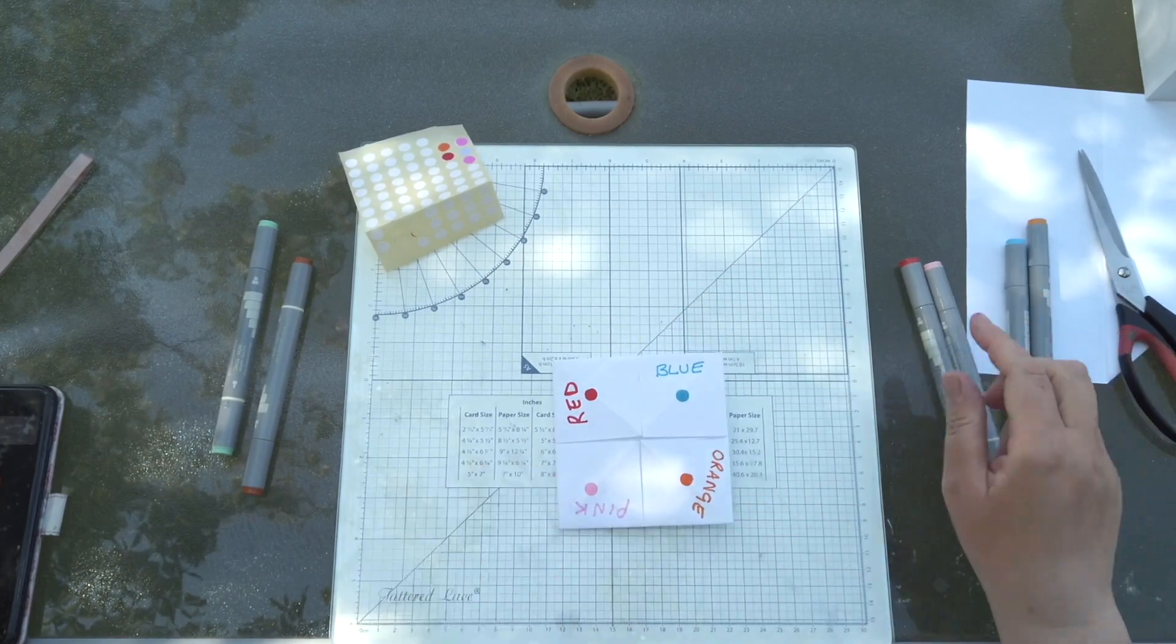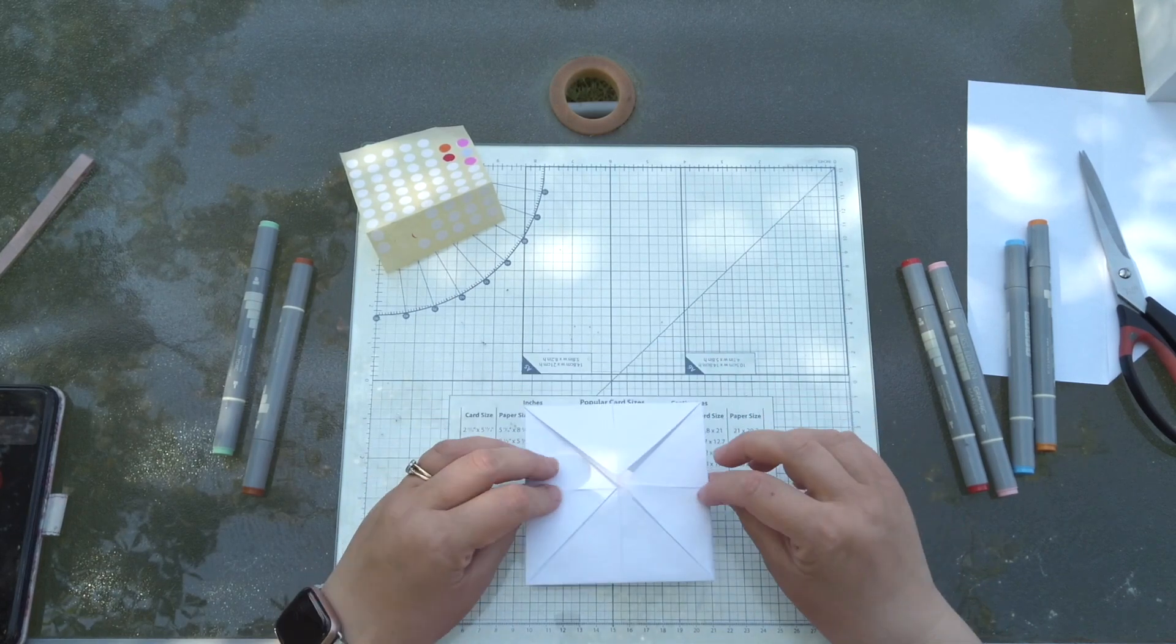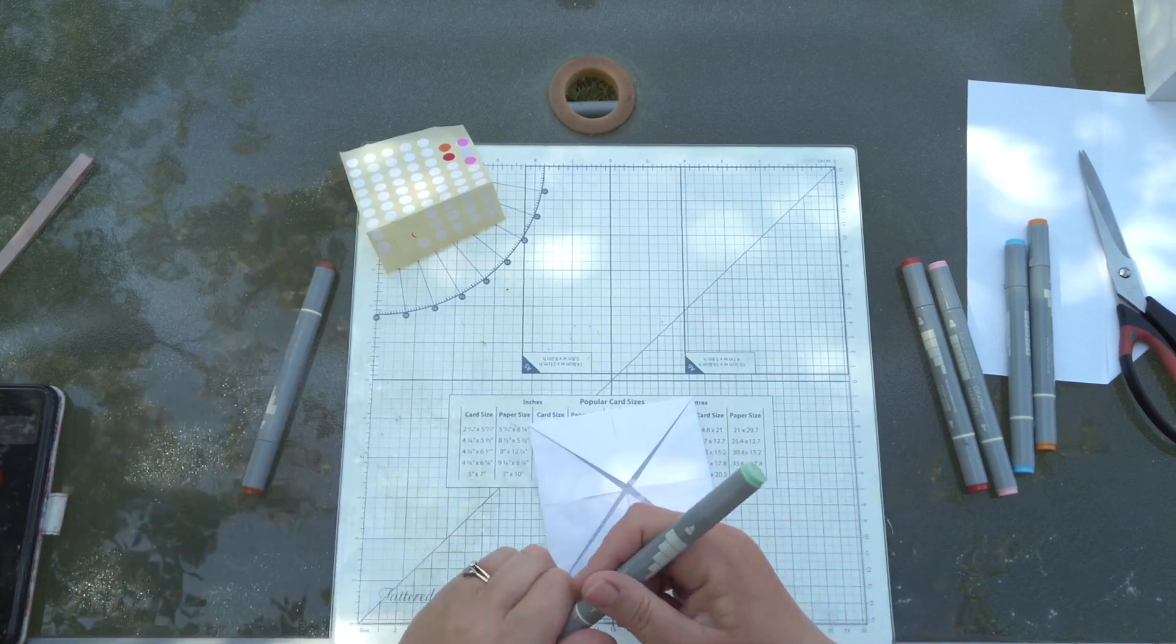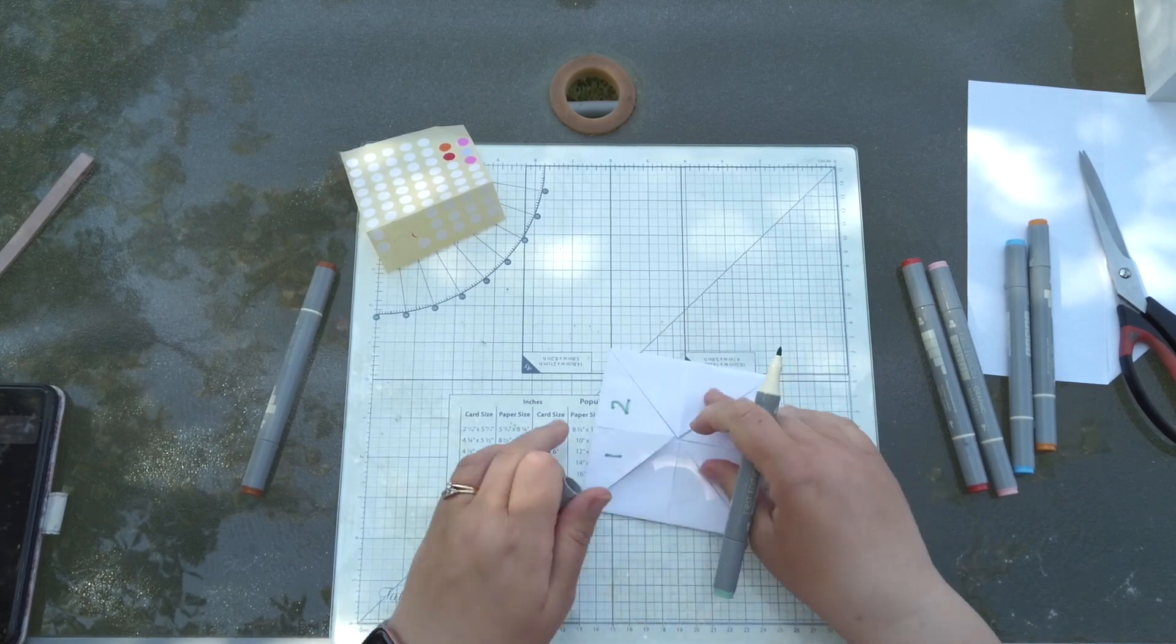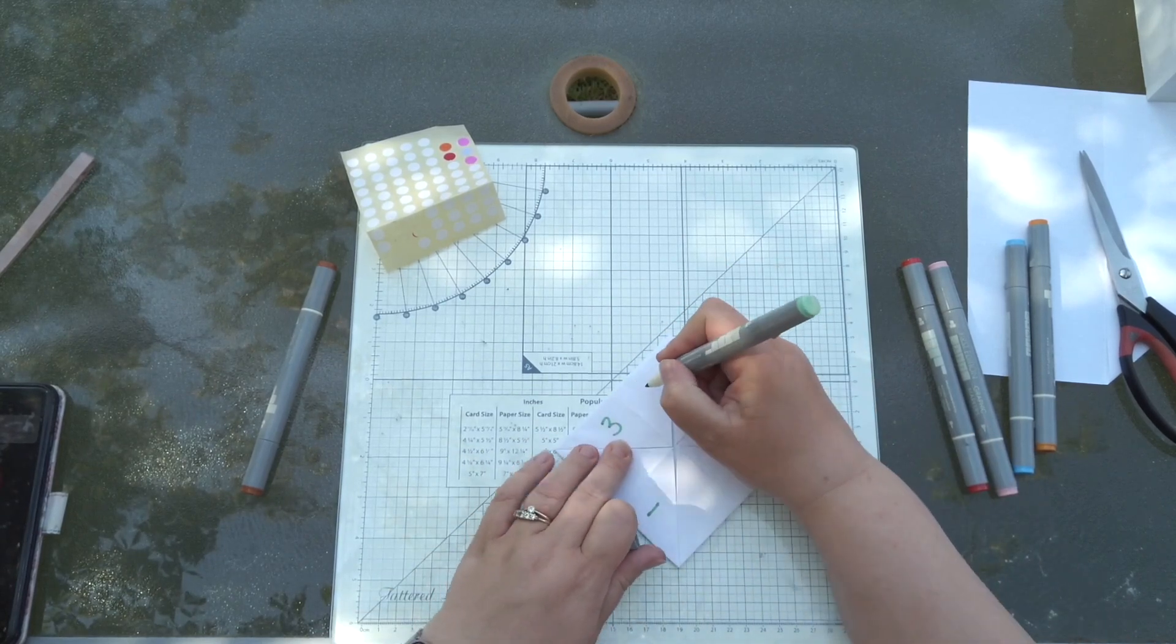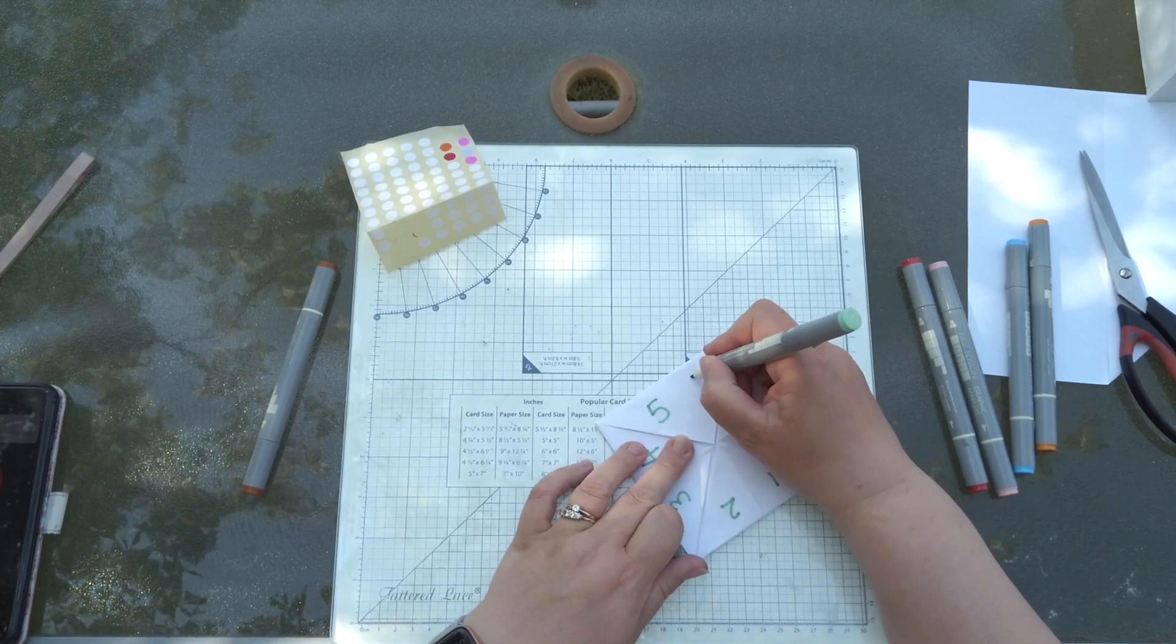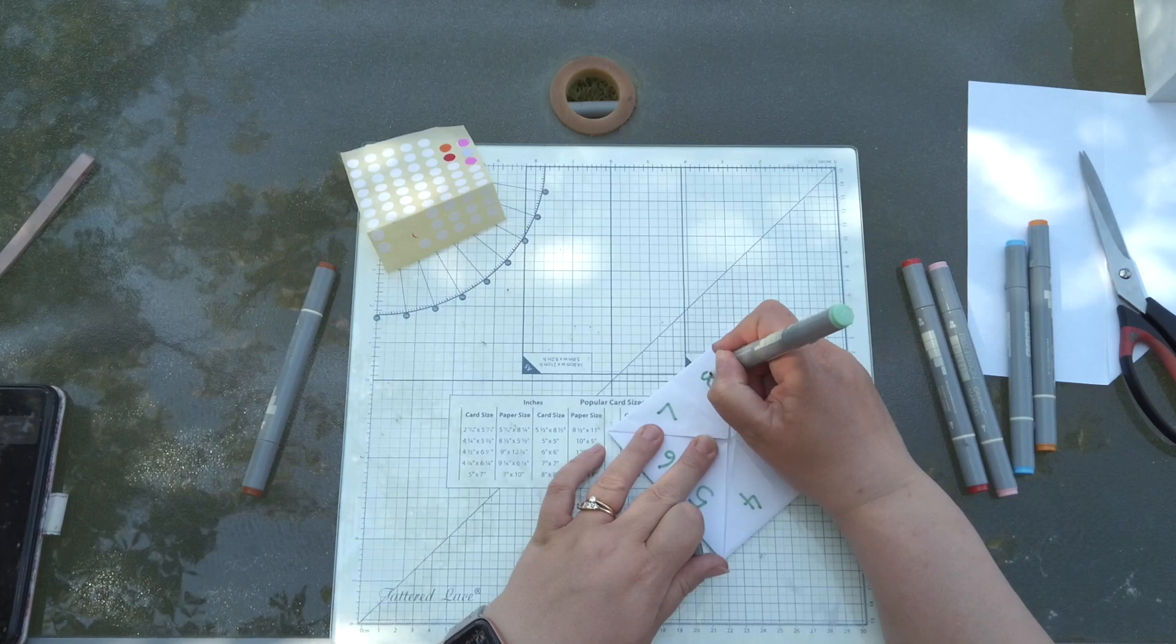I'll show you how these work at the end if you're not sure. Okay, so that's your color side done. Then you need to do this side, this side is going to have your numbers on. So put one, two, three, four, five, six, seven, eight.